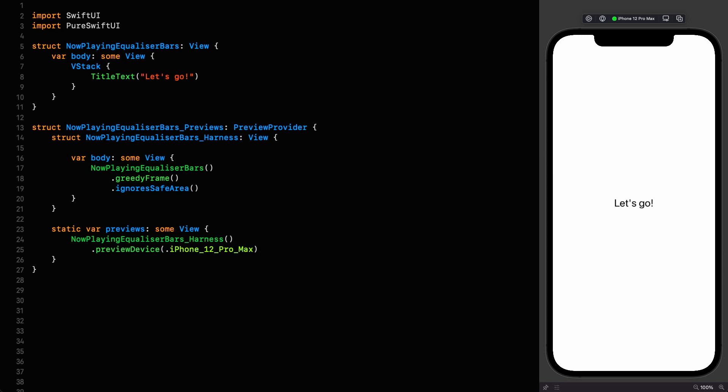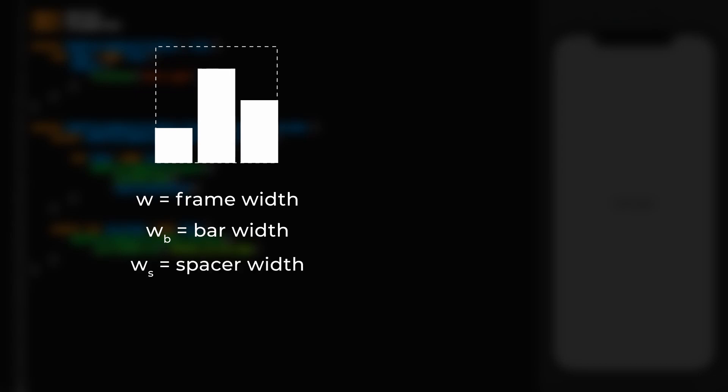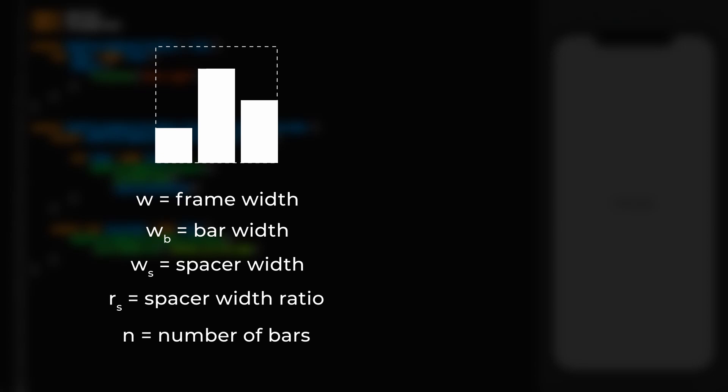Let's get stuck in, and right off the bat we're going to go in hard with some algebra. The reason we need algebra is because I want to make the width of the bars size-agnostic. Here's a frame and an example of the bars we're going to be creating. Let's define some terms: W is the width of the frame; WB is the width of the bars, which is what we're trying to calculate; WS is the width of the spacers, based on the size of the bars via the spacer ratio RS; and N is the number of bars. The width of the frame equals the number of bars multiplied by the bar width, plus the number of bars minus 1 multiplied by the width of the spacers, since there is always one fewer spacer than bars.